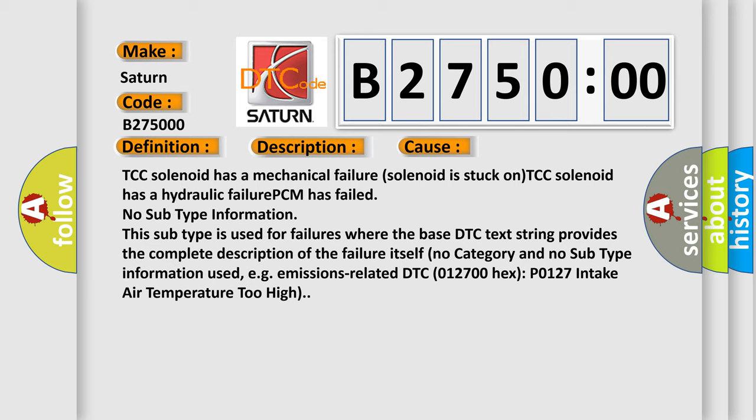No subtype information. This subtype is used for failures where the base DTC text string provides the complete description of the failure itself. No category and no subtype information used, e.g. emissions related DTC 012700 hex P0127 intake air temperature too high.